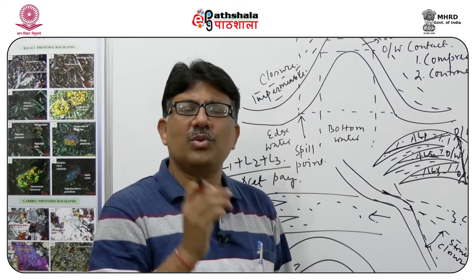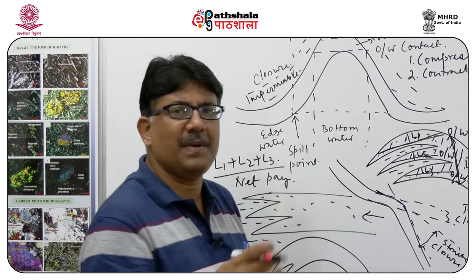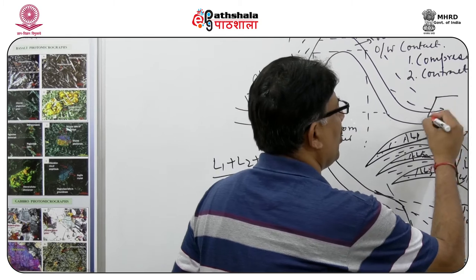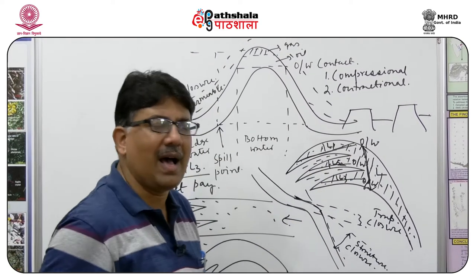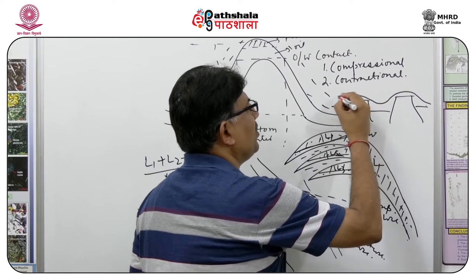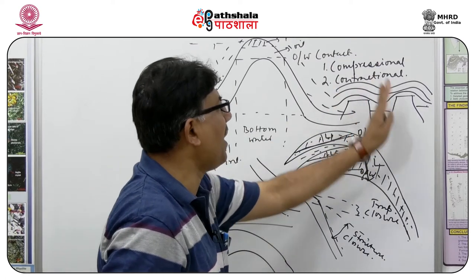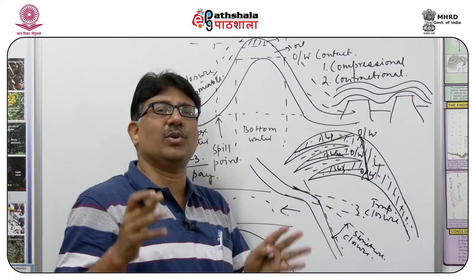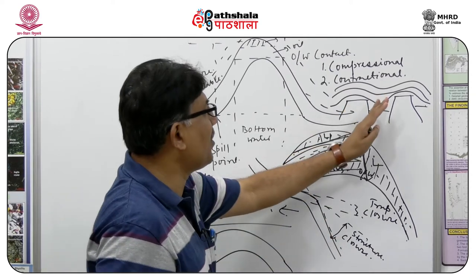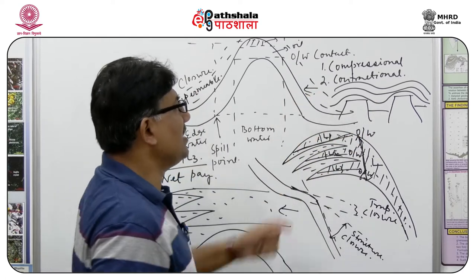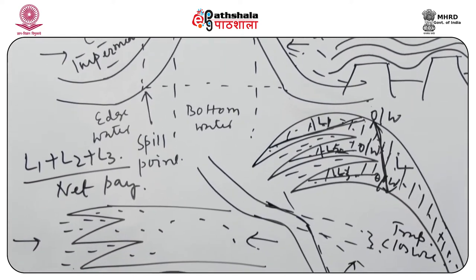The second type is the growth dome. Any subsurface structure — such as a horst-graben kind of structure, a salt dome, or a basinal high — if you have sedimentation above it, that sedimentation will cause differential compaction in different parts of the basin. That differential compaction can also cause some kind of uplifted zone which can act as a closure. That is the contractional mechanism, which is also very important.